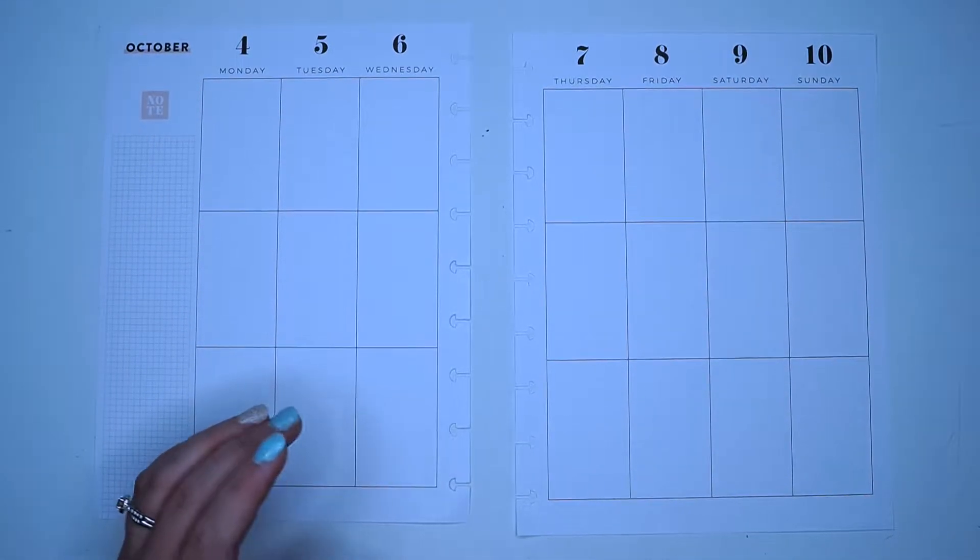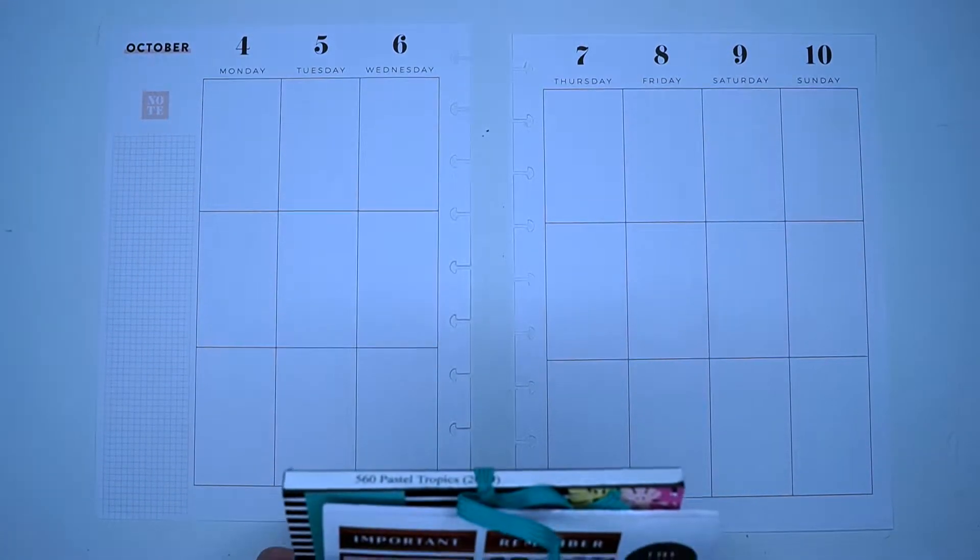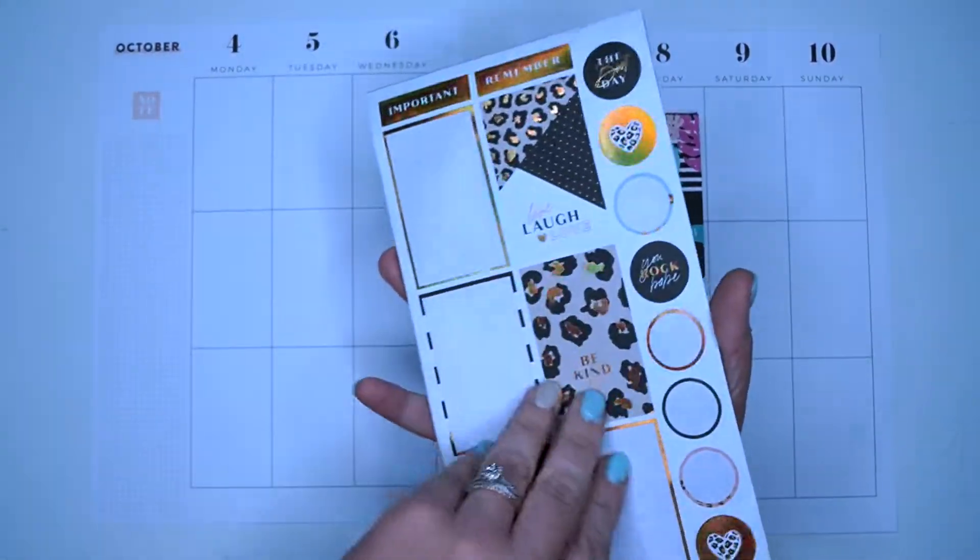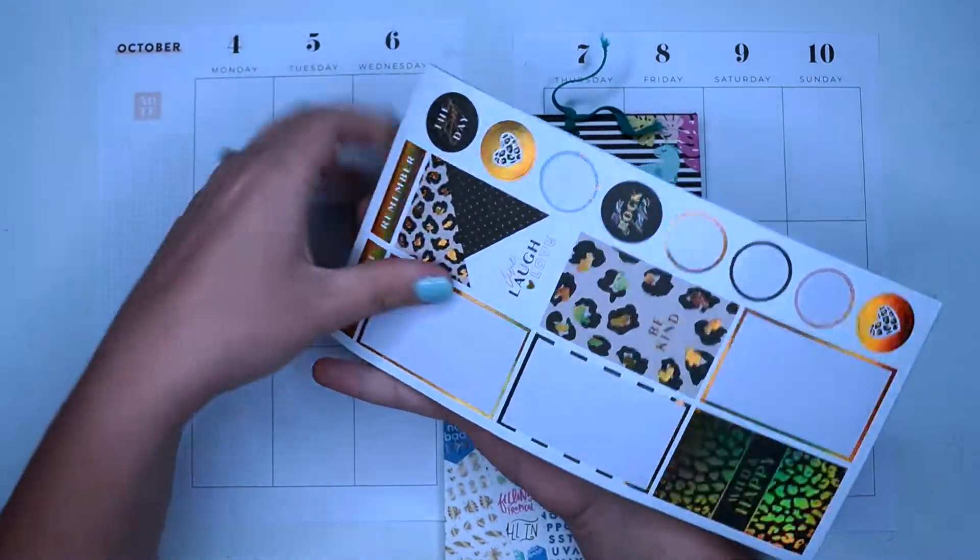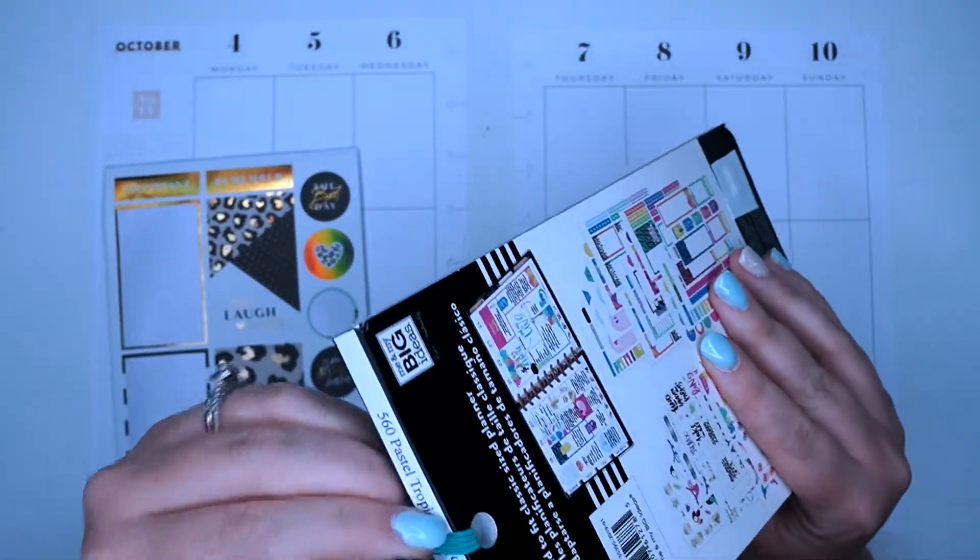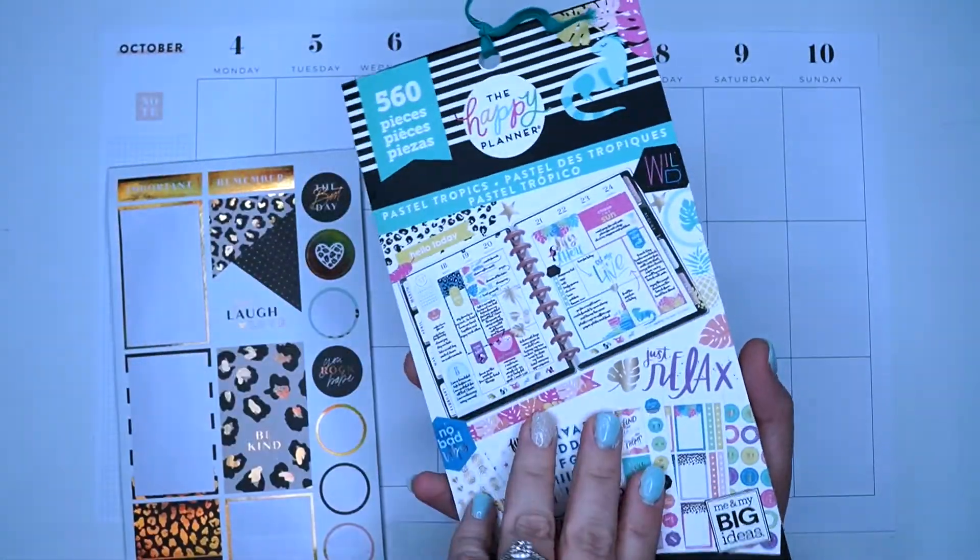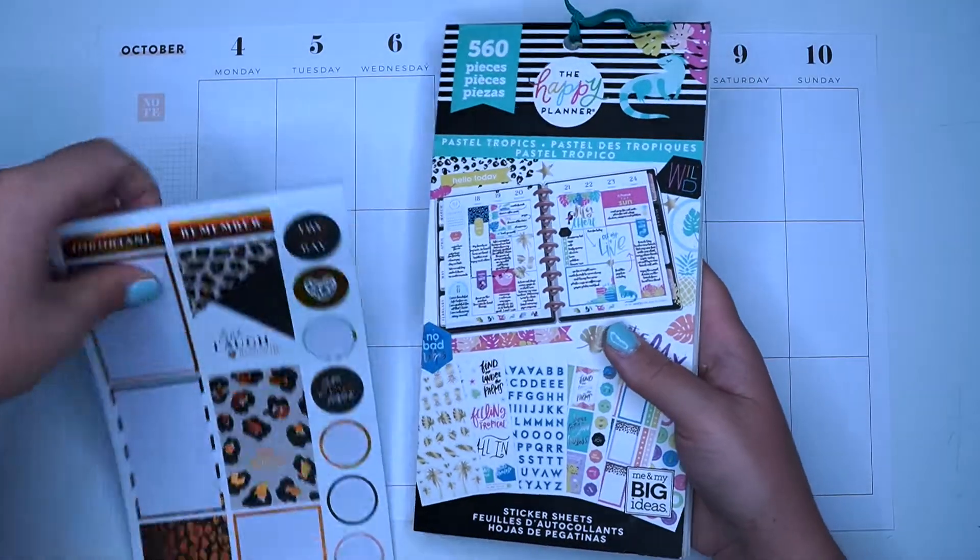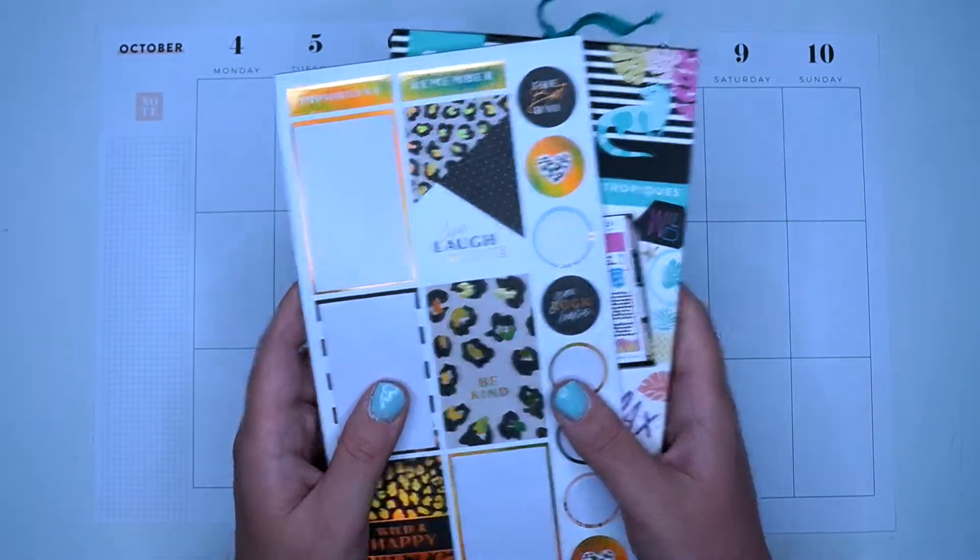This week you guys, I want to combine two unlikely sticker books. This is the Be Happy Box 10-page sticker book, and then this is the Pastel Tropics from 2019, which has some really fun bright colors. I thought this would be a really fun combo.